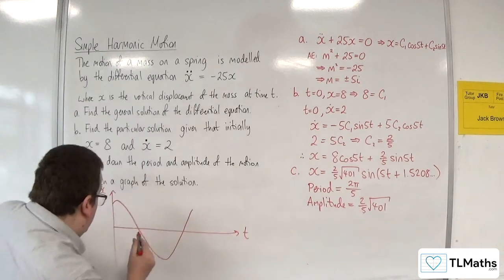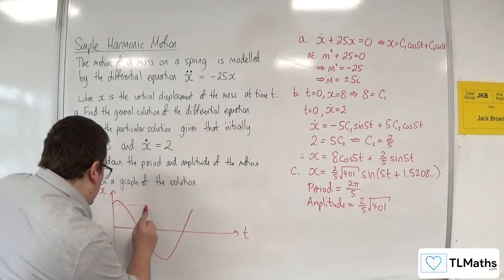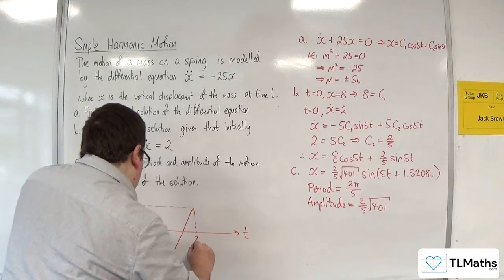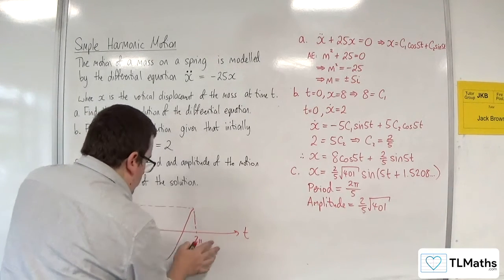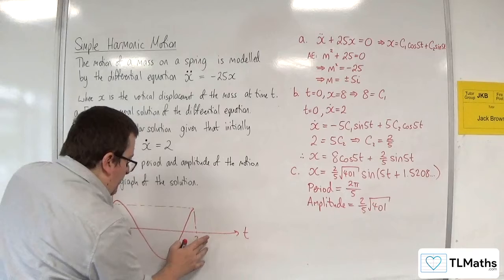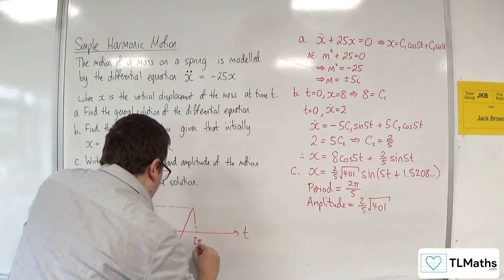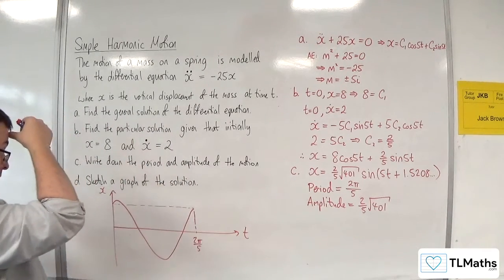So it's going to go something like that. That's going to be 2π over 5, rather.